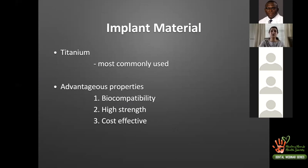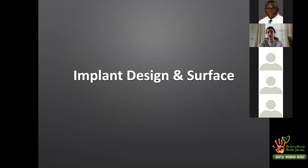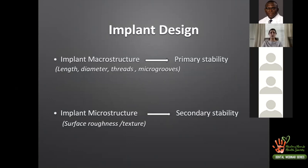Implant design includes both macro-structure and micro-structure features. Macro-structure includes length, diameter, threads, and micro-grooves, which help achieve primary stability — the mechanical stability of the implant in native bone on the day of placement. The more aggressive the thread, the higher the primary stability. The micro-structure refers to surface texture on the implant body, which provides secondary stability through osseointegration.